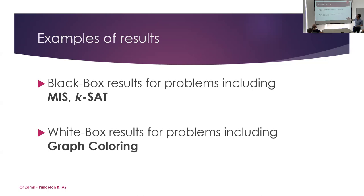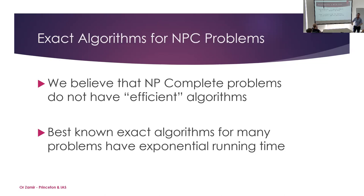The type of results we want are: if I can solve maximum independent set in c^n time, and I assume the input is almost regular, then I can solve it in (c − ε)^n time — shaving off an exponential factor. We call these 'black-box' results, meaning I don't care what the general-case algorithm is; I can improve it. We also have 'white-box' results where I do assume something specific about the running time I'm targeting. The main black-box result is for k-SAT; the main white-box result is for graph coloring.